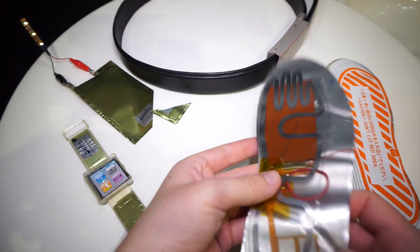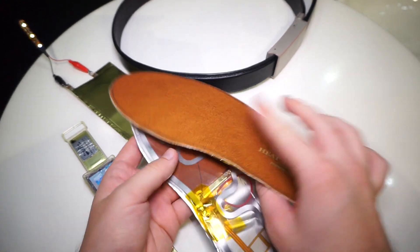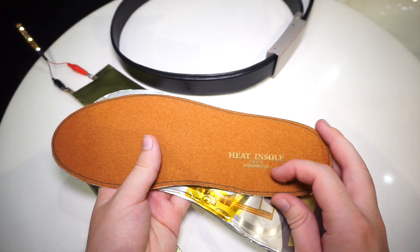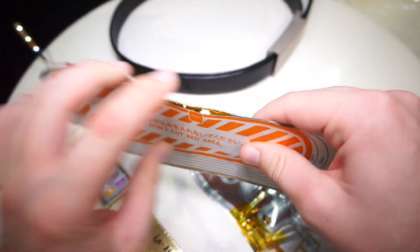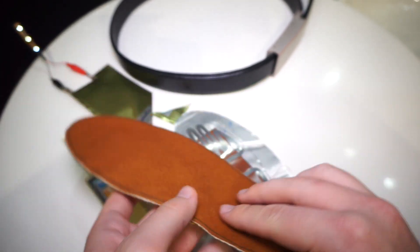Last but not least, they're showing a heating insole. This is what it looks like—it's from a Japanese company. As you can see, it's super thin and also has a charging port over here.